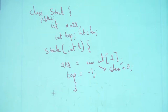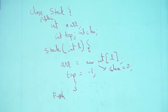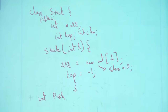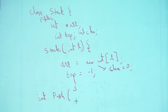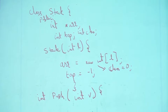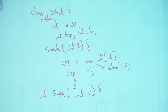Now I need to write push. I will be consistent with earlier: if push is successful it returns the value which was pushed, otherwise it returns minus one. The function signature is int push(int V), where V is the value to be pushed.